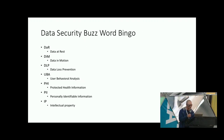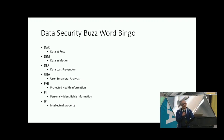You're going to know more. DAR is data at rest. DIM is data in motion. DLP is data loss prevention. UBA — user behavioral analysis — is supposedly the new hotness when you implement it. It uses AI and machine learning, which we know doesn't really work that well.